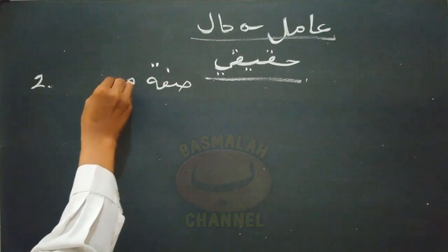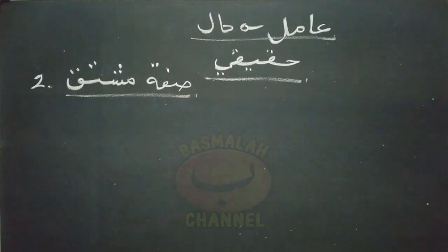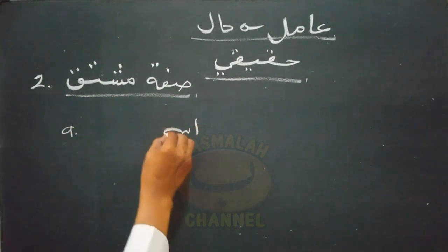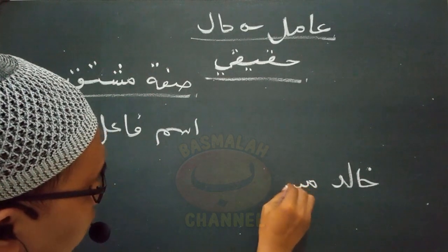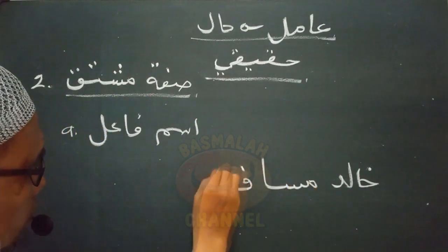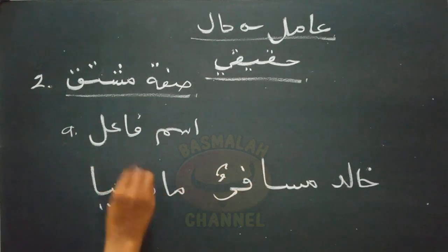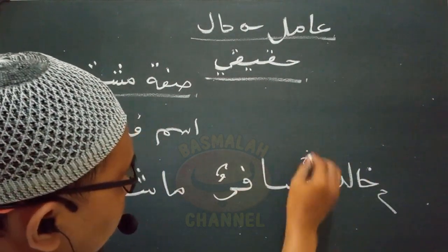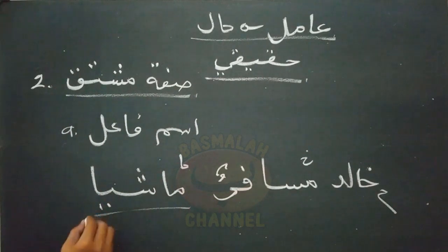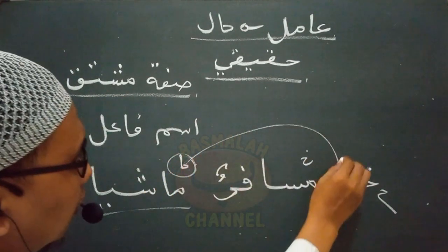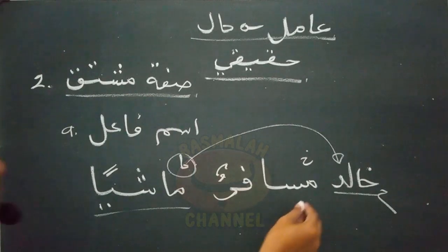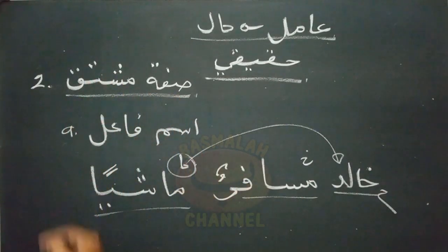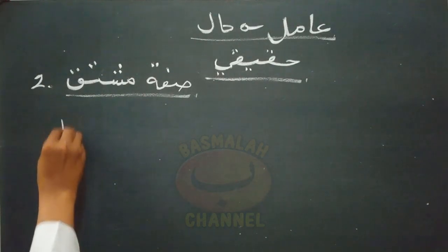Bentuk yang kedua dari amil hakiki adalah berupa sifat mushtaq. Ada kalanya berupa isim fa'el. Contohnya 'kholidun musafirun masyan' - Kholid ialah orang yang berpergian dalam keadaan berjalan kaki. Lafat masyan ini adalah hal yang menjelaskan keadaan daripada lafat kholidun sebagai sohibul halnya, wajib nasob, dan amil yang menasokkan yaitu lafat musafirun yang merupakan sifat mushtaq berupa isim fa'el.